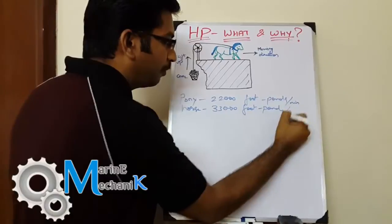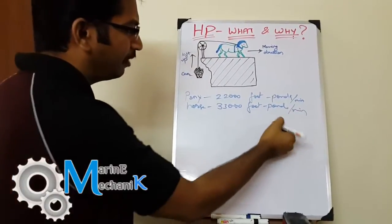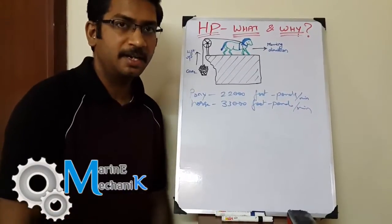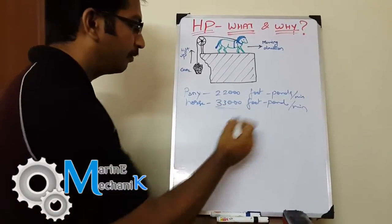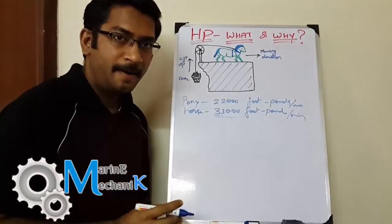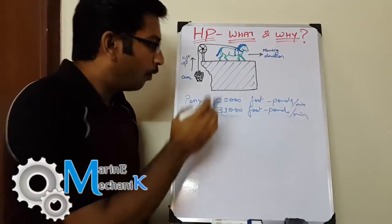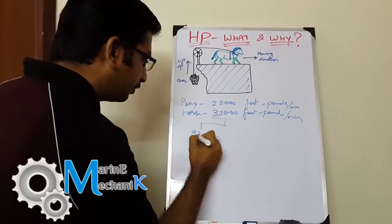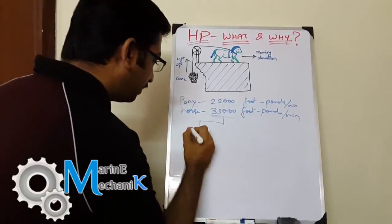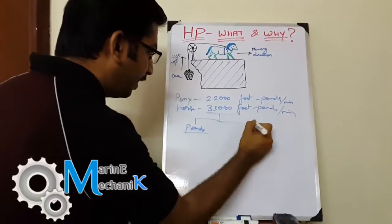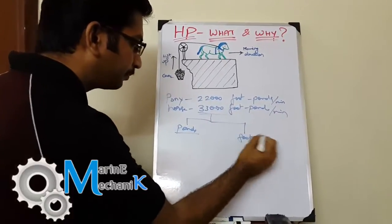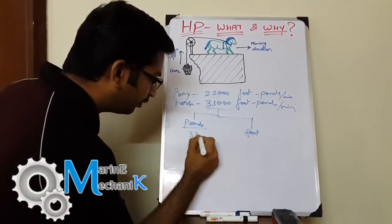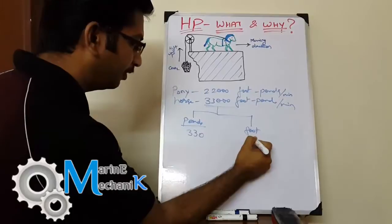Or if you convert it into seconds, it's roughly 550 foot-pounds per second. That's the approximate work done by a single horse. This 33,000 can be written as 330 pounds over 100 feet, or you could say 100 pounds over 330 feet.